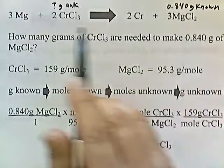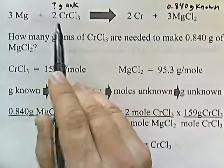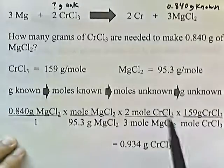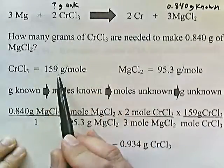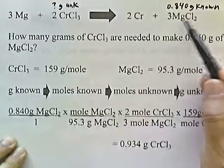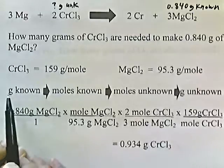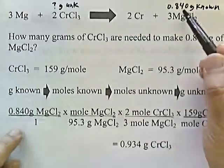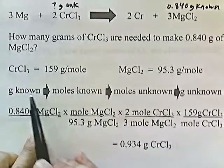In the previous problem the product was the unknown and the starting material was the known. Here we've reversed it — we want to know how much starting material we need to produce a certain amount of product. Now that we know the known and the unknown, let's go through the drill. Chromium chloride: one mole weighs 159 grams per mole. Magnesium chloride: one mole is 95.3 grams per mole. We take the known and put it over one.